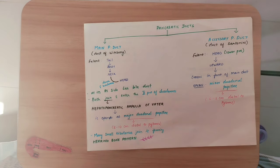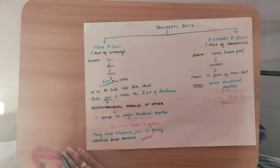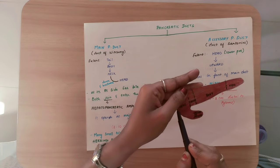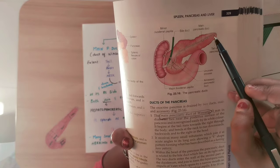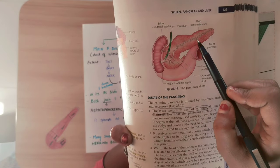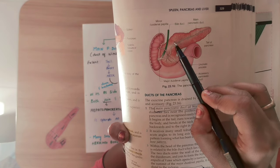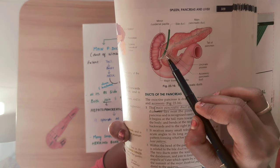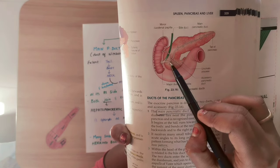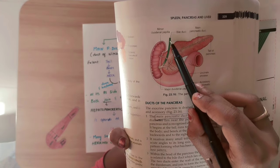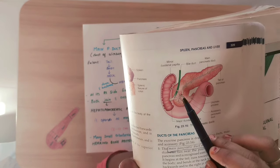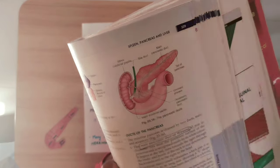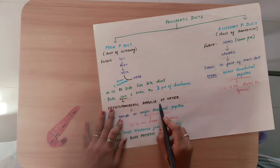Looking at the main duct: it runs from the tail through the body to the neck. At the neck, it gives a downward and backward bend, where it joins the bile duct. This junction is called the Hepatopancreatic Ampulla of Vater.